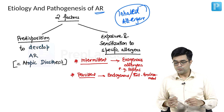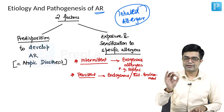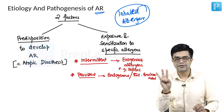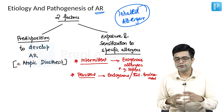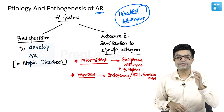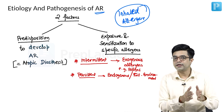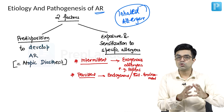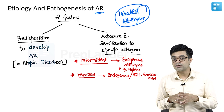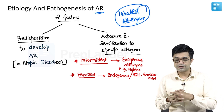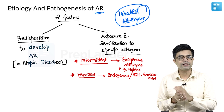Now, what is the pathogenesis? Before we go to pathogenesis, you need to understand that there are three distinct parts of the disease process. The first part is sensitization. Sensitization tends to occur quite early in life. Most of the sensitization happens in infancy, and that is why exposure to allergens and exposure to smoking should be avoided in the infancy period.